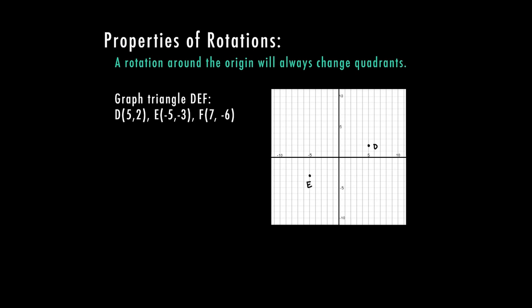F is at seven, negative six. And so what will happen when I do rotate this is every single point is going to change quadrants. The whole shape is not in a particular quadrant. Let me go ahead and connect these points.